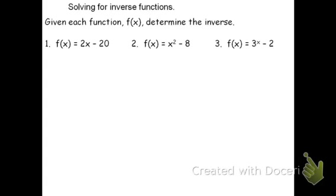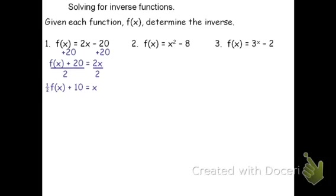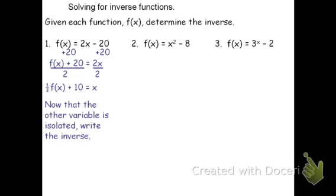Lastly, we'll look at how to determine the inverse algebraically. We solve for the other variable and then switch input and output. For example, if f = 2x − 20, I want to isolate x. I'll undo the function using reverse order of operations: add 20 to get f + 20 = 2x, then divide by 2 to get x = ½f + 10. Now that x is isolated, I write the inverse: f⁻¹(x) = ½x + 10. Switching the variables makes it the inverse function. Try the other two on your own.